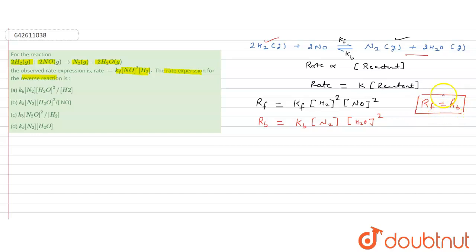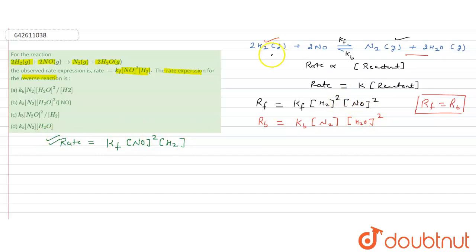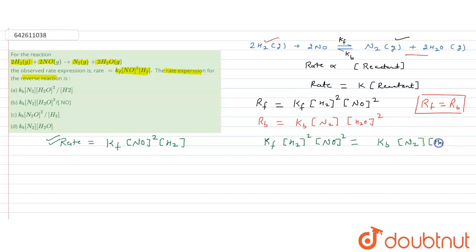The given rate expression in the question is: kf into concentration of NO squared into concentration of H2. At equilibrium, setting forward rate equal to backward rate: kf[H2]²[NO]² = kb[N2][H2O]². This is the equilibrium condition.